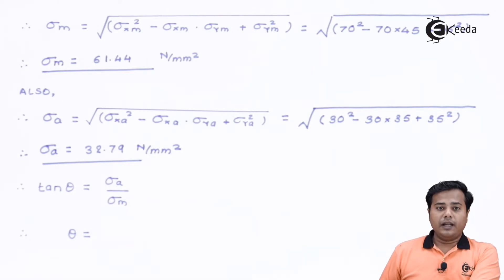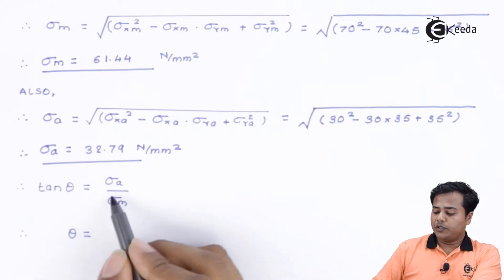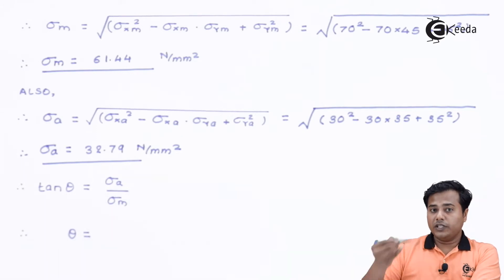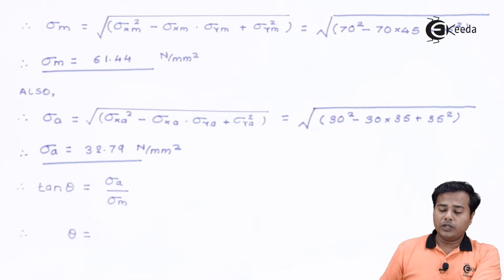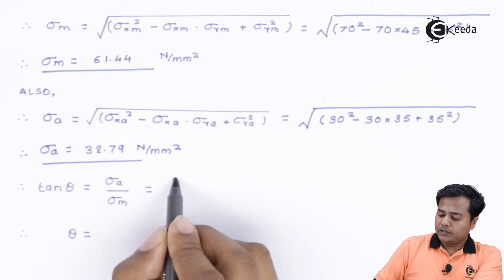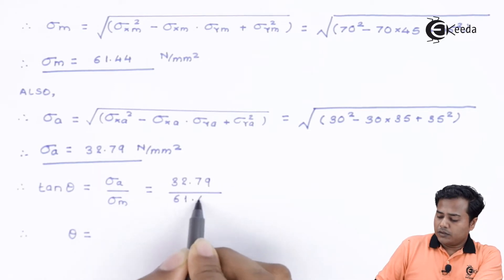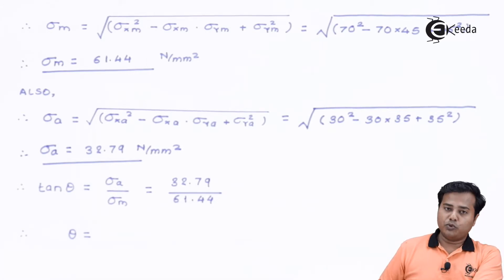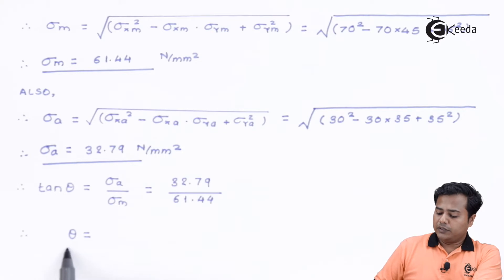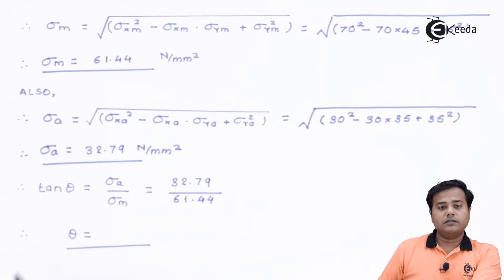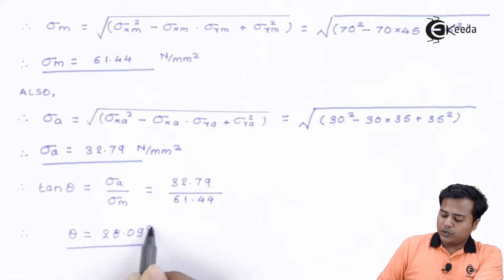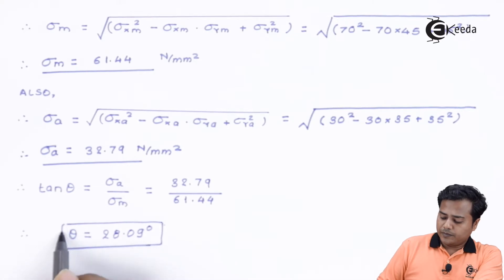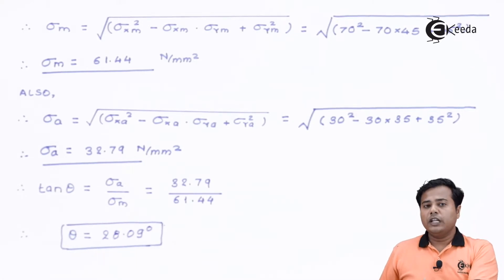Let us now find the angle of slope. We know that sigma_a is plotted on the Y axis and sigma_m is plotted on the X axis. The slope angle theta is found using the ratio of sigma_a to sigma_m. Substituting the values, theta comes out to be approximately 28.09 degrees, which is the slope of the operating line.